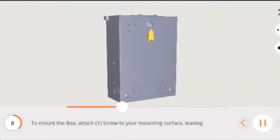To mount the box, attach one screw to your mounting surface, leaving approximately one quarter of an inch of the screw exposed. Hang the box on the screw, adjusting the depth of the screw if necessary. Note, mounting hardware is not included.